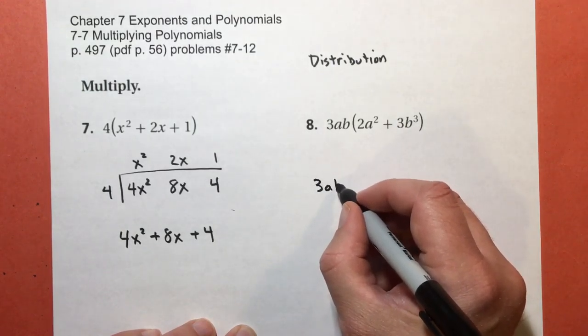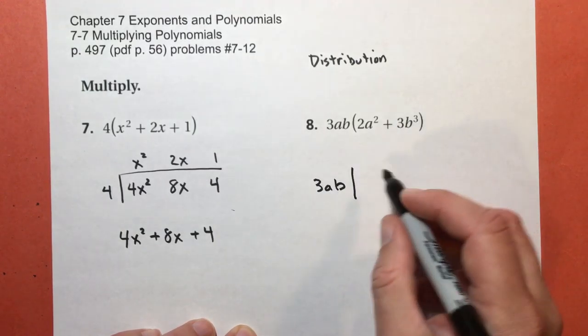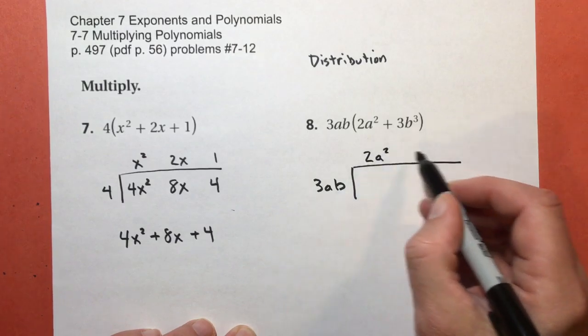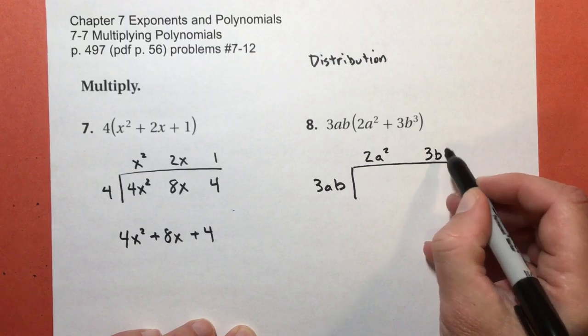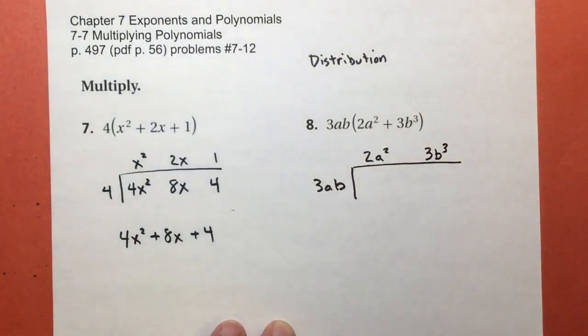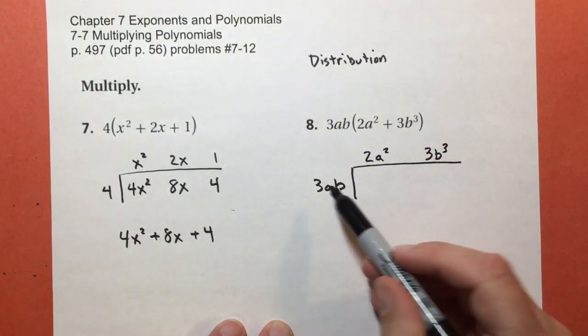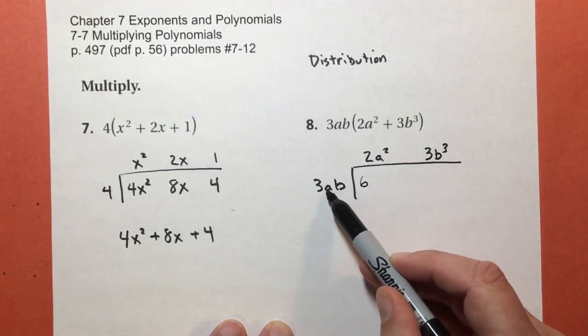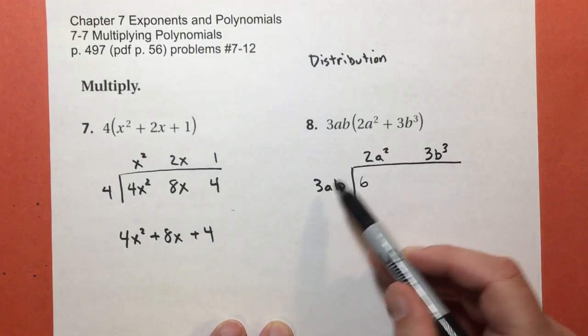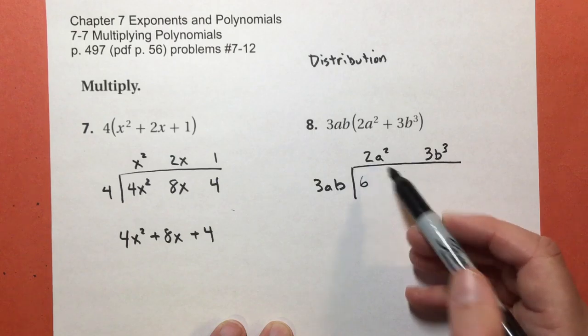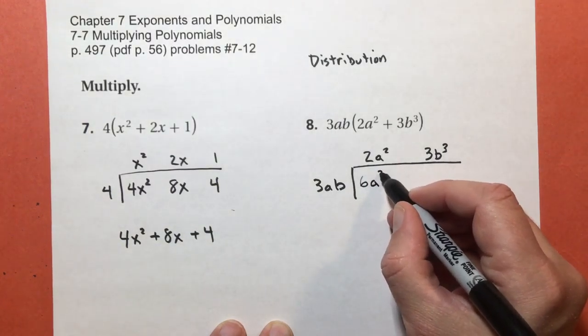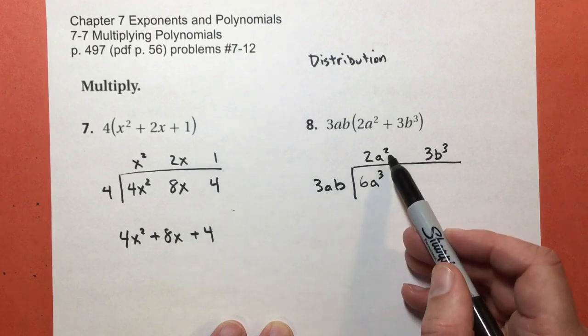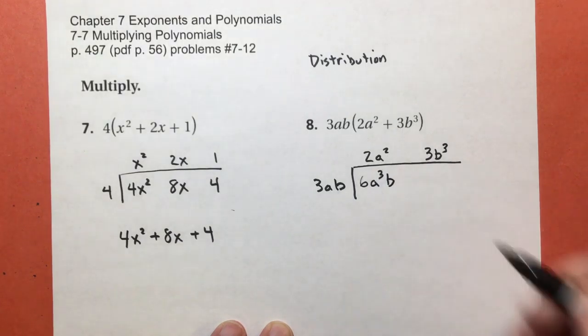For problem number 8, I get 3 times a times b. And I get 2a to the second power, 3b to the third power. 3 times 2 is 6. 1a, or a to the first power, times a to the second power is going to be a to the third power. 1 plus 2 is 3. And I have a variable b, but none of them here. So that b comes along for the ride.